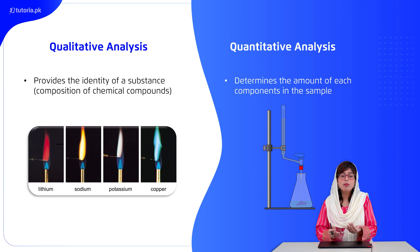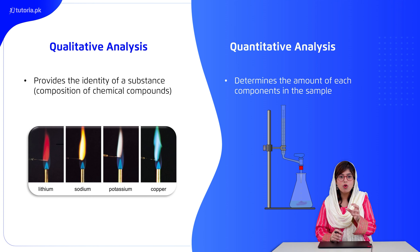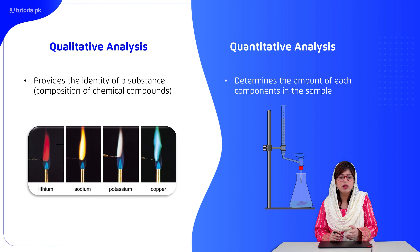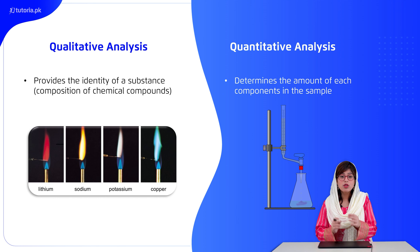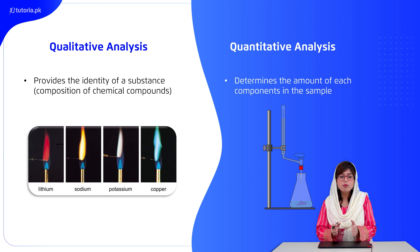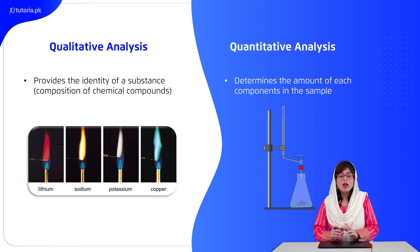For example, copper gives a blue color in elemental analysis — that is its characteristic color. Similarly, sodium gives a golden yellow color in characteristic flame analysis.